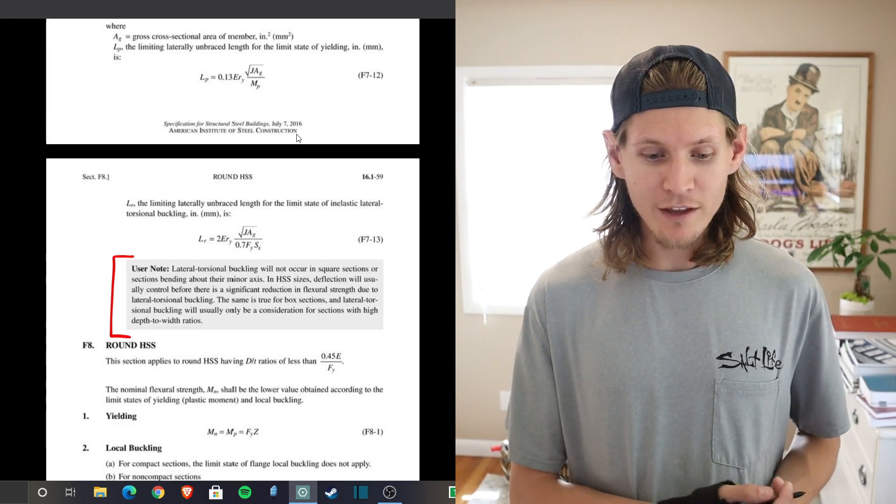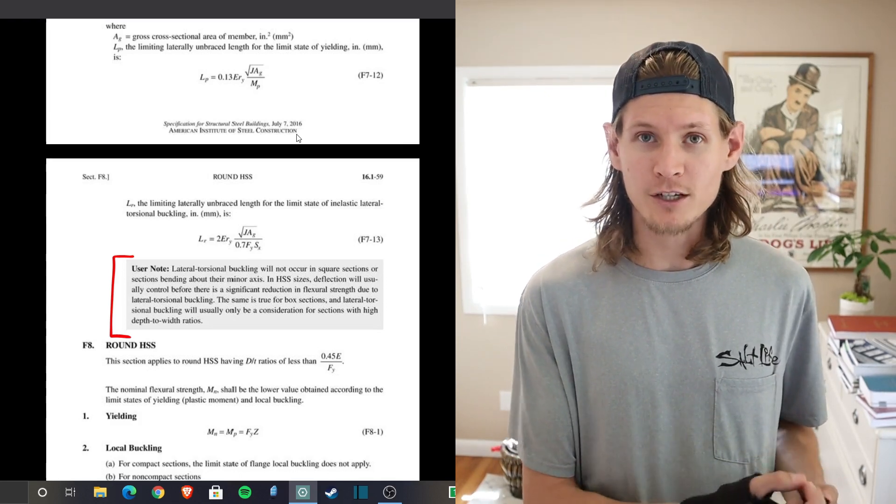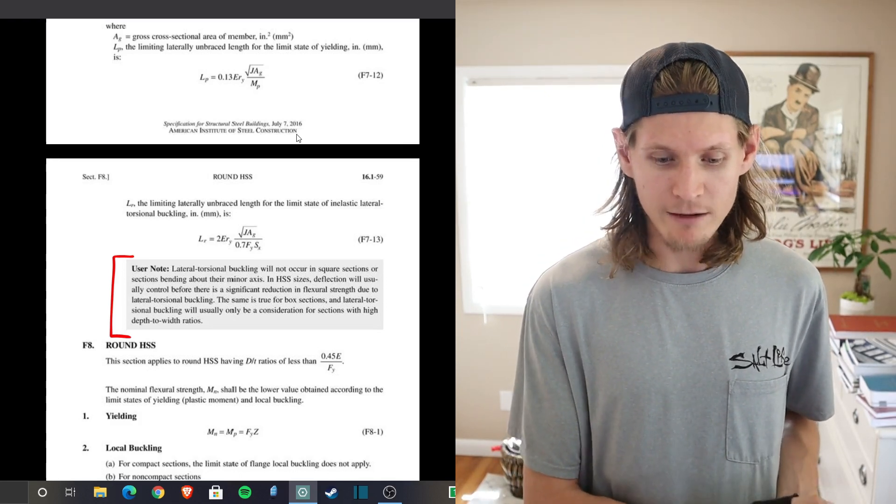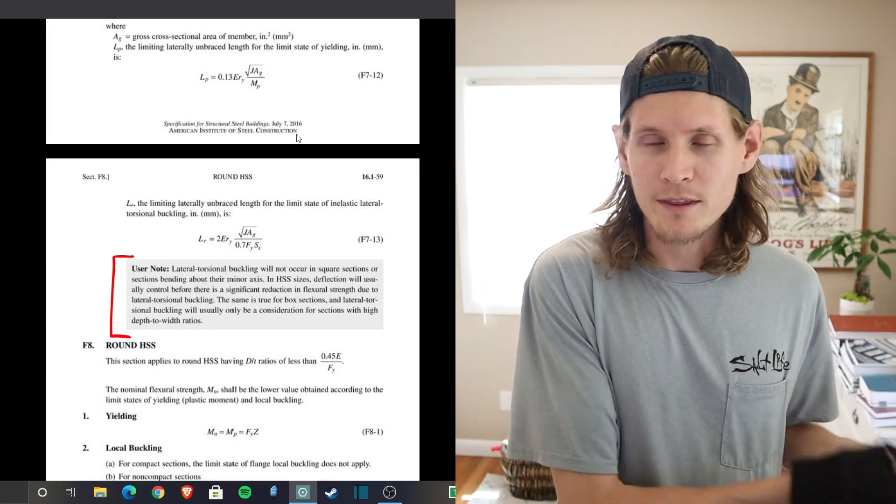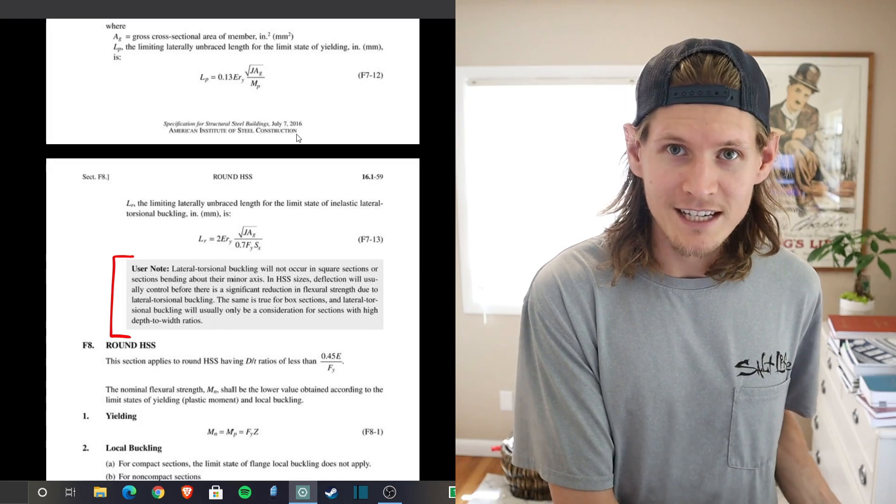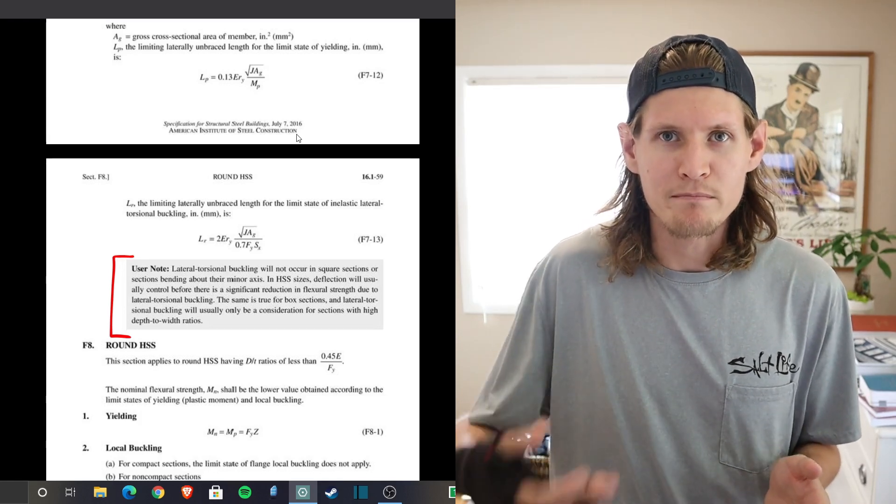In HSS sizes the deflection will usually control before there's a significant reduction in flexural strength due to lateral torsional buckling. This is kind of the updated user note that they gave you at the very beginning of the 14th edition. They've now reworded it here in the 15th edition and added more meat to it.